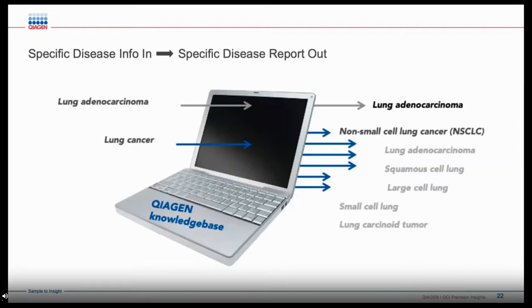Even epithelial tumors can be divided into specific subtypes such as serous, endometrioid, clear cell, and mucinous, and serous carcinoma can be high-grade or low-grade. The specificity of the diagnosis submitted to Kyagen is directly related to the specificity of the information returned in the report. A case submitted with a diagnosis of lung adenocarcinoma will return information specific to lung adenocarcinoma. However, for a case submitted with a more general diagnosis like lung cancer, the case could be small cell or non-small cell carcinoma, or a lung carcinoid, and the system will return more broad information to cover all diagnostic possibilities.